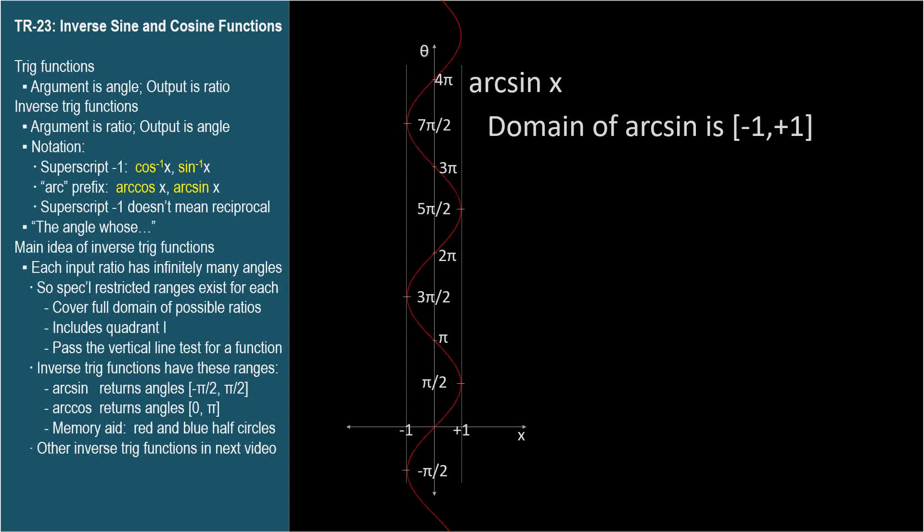Here's a section 5 pi over 2 to 7 pi over 2. It covers the full domain from negative 1 to positive 1, and it passes the vertical line test. So we could simply define the arc sine function to always return angles from 5 pi over 2 to 7 pi over 2. Well, that's not really a convenient interval. Those angles loop completely around the circle. Let's look for something more expedient. Well, this is better, I guess. But let's find some smaller angles.